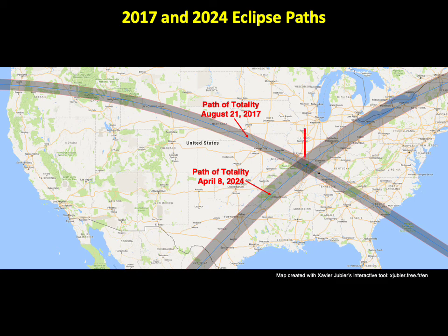Notice that this small region south of St. Louis is on both paths, giving it two total solar eclipses in just seven years. Meanwhile, Los Angeles last had a total solar eclipse in 1724, and will not have another until the year 3290.